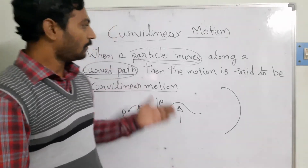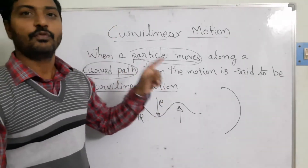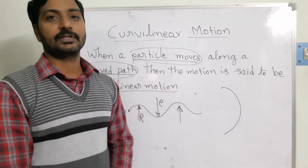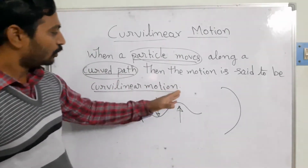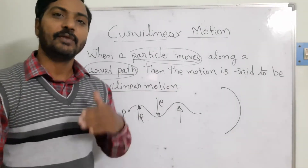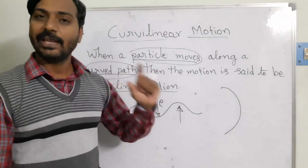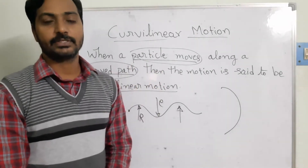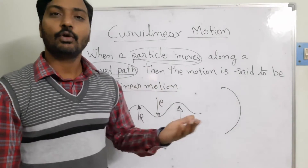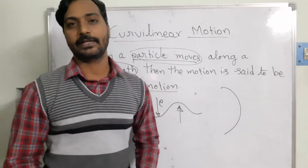In this case, the resultant of the applied force is acting in the curvilinear direction, so we can say that motion is also curvilinear motion. Either in terms of the force or in terms of the path, we can define curvilinear motion. Now we will develop the velocity as well as the acceleration of that particular point.